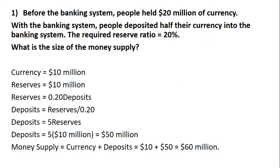Problem one. Before the banking system, people held $20 million of currency. Then a banking system was introduced, and people deposited half their currency into the banking system. The required reserve ratio is 20%. Let's find what the size of the money supply is.